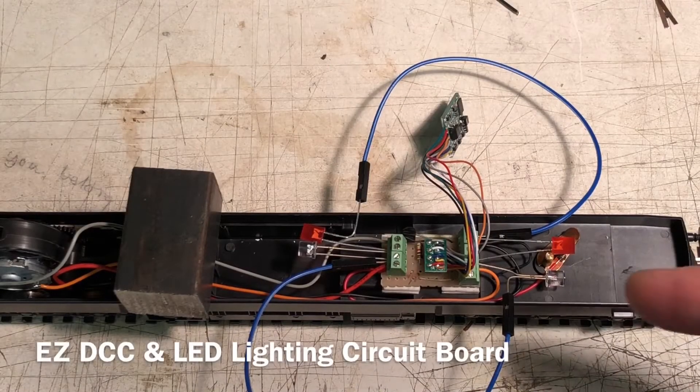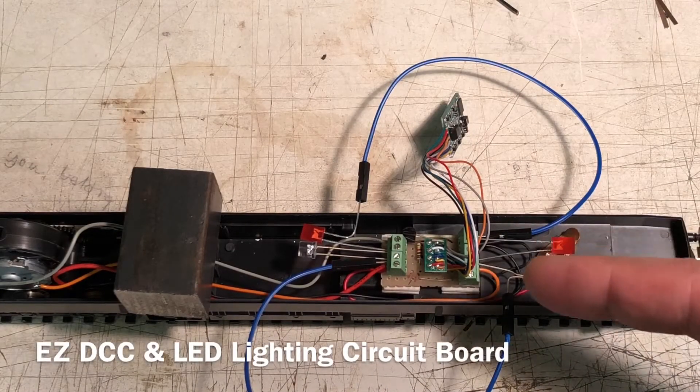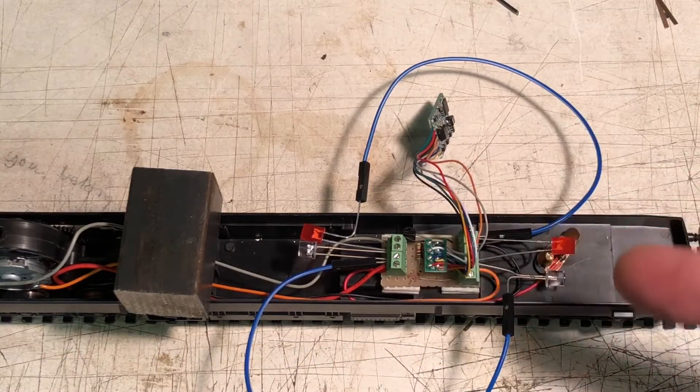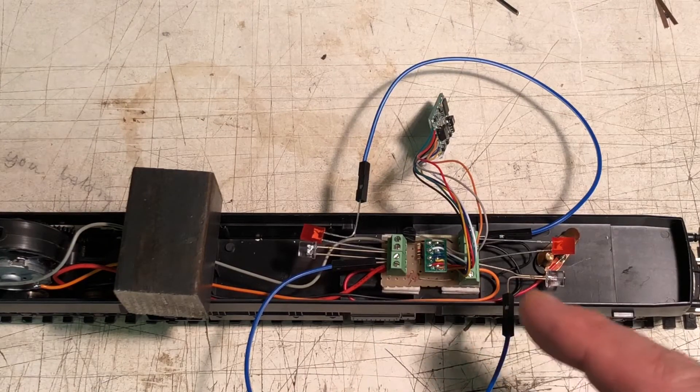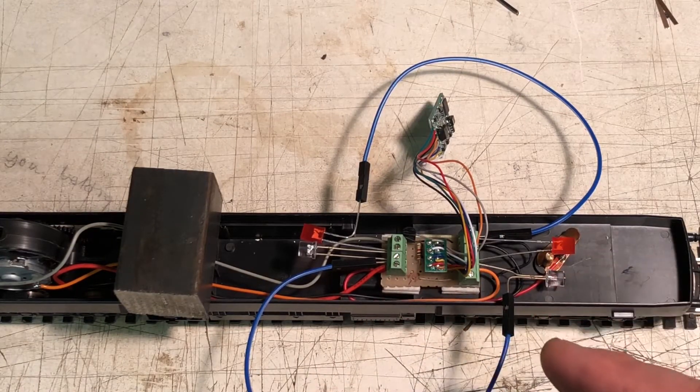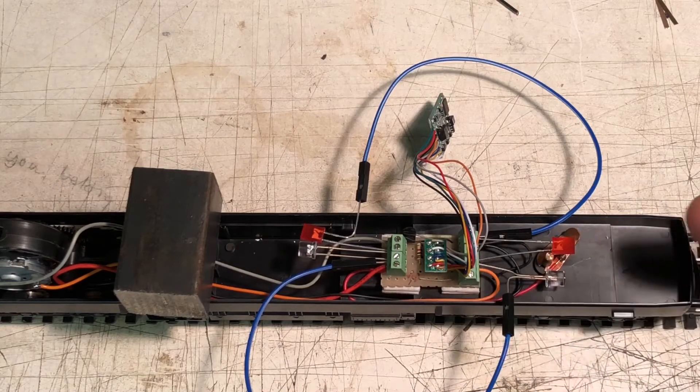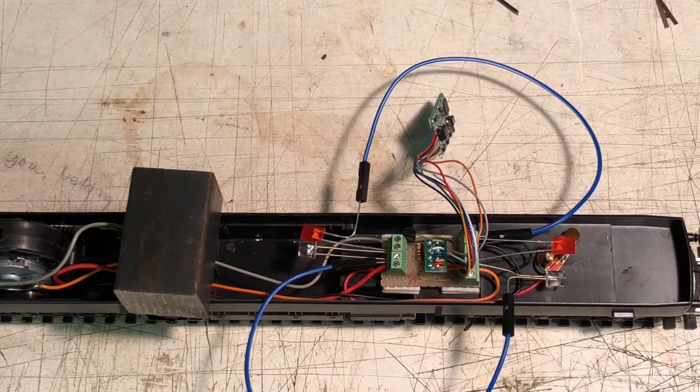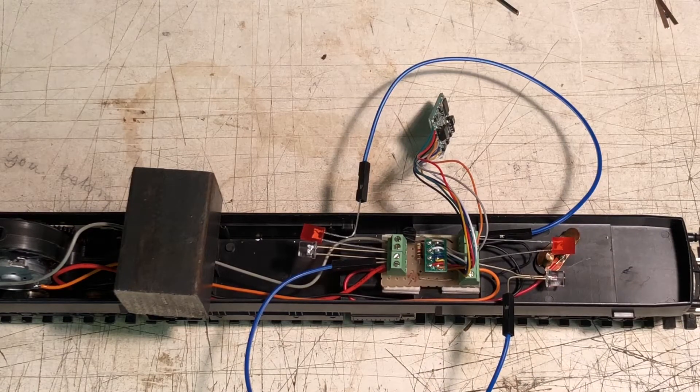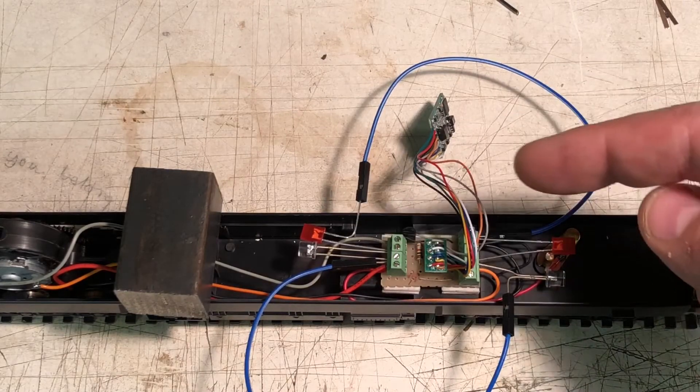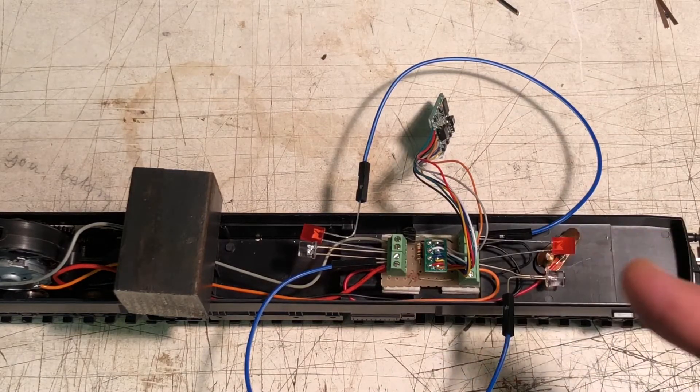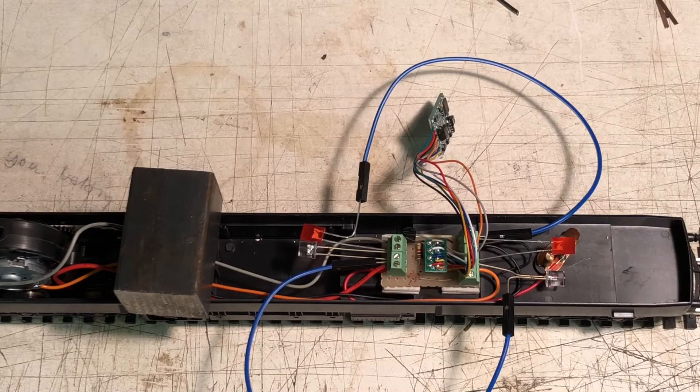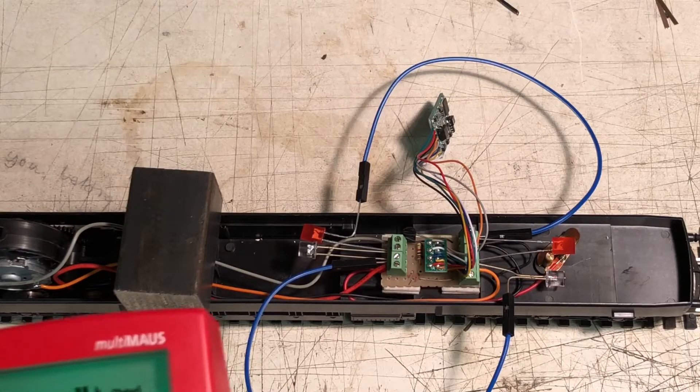The idea of this circuit board is to plug your 8-pin decoder into the middle, and then you've got terminals where you connect the wires from your motor and pickups. You also wire your LEDs straight in because the circuit board has all the resistors you need for LEDs. I've also got a little transistor there as part of the circuit so that you can have tail lights on a function button, directional tail lights just using one function.